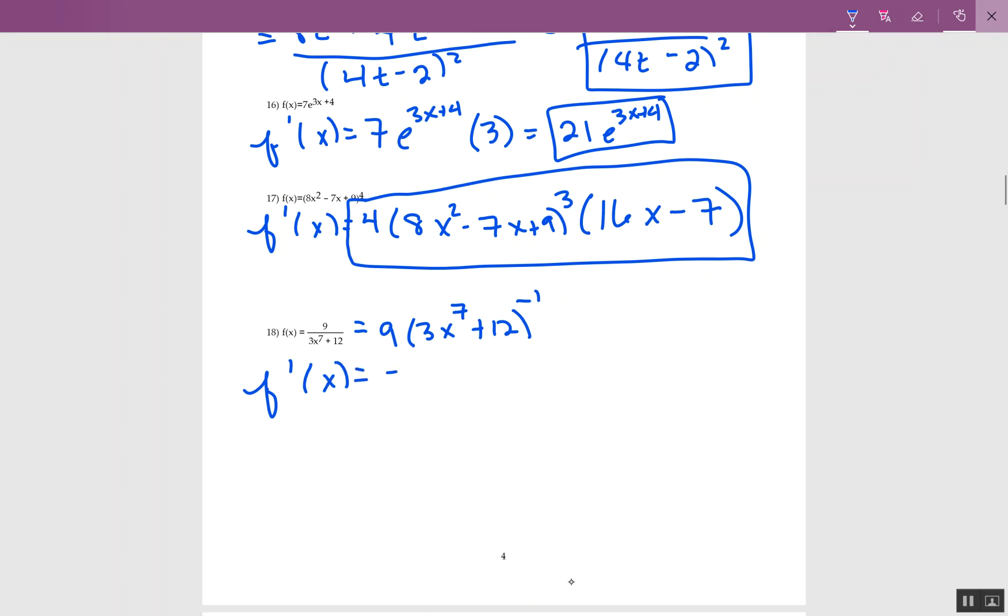So now I take the derivative. The negative 1 comes down. I have negative 9. I have 3x to the 7th plus 12. Now it's to the negative 2. Back inside, I need to multiply and find this derivative. So 3 times 7 is 21x to the 6th.